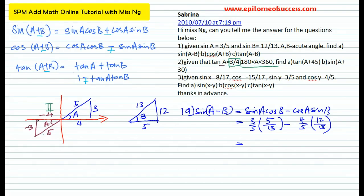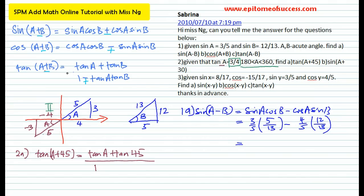So now you have a complete triangle. What you do is the same thing — find tangent(A + 45). According to the tangent addition formula, tangent(A + B) equals tangent A plus tangent B over 1 minus tangent A times tangent B. If it is a plus on top, the bottom will be a minus. So that's tangent A plus tangent 45 over 1 minus tangent A times tangent 45.